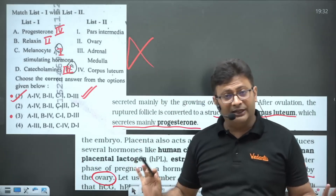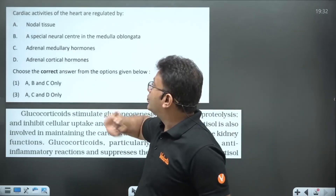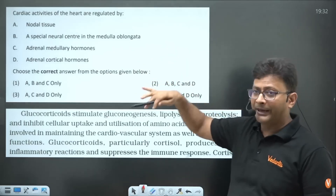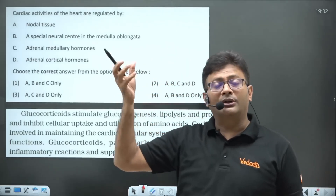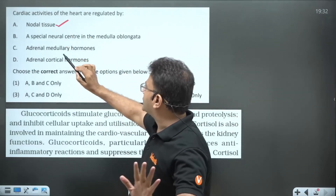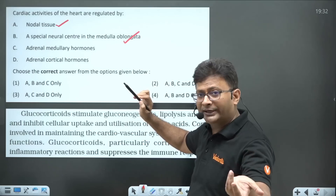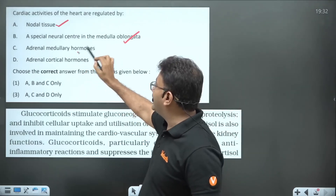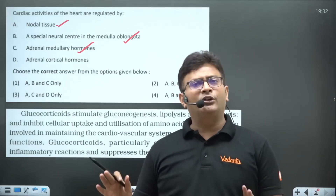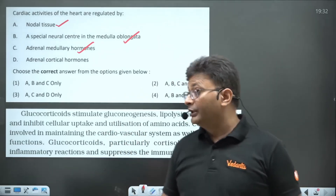Now look at the next question: cardiac activity of the heart is regulated by which hormones? It is clearly given in NCERT that nodal tissue itself regulates it, and medulla oblongata controls it through the vagus and axillary nerve. For hormonal regulation, NCERT mentions adrenal medullary hormones — epinephrine and norepinephrine.